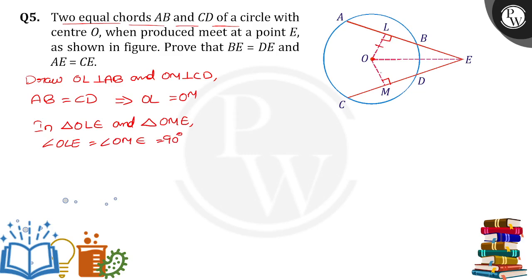Next, OL is equal to OM since the two chords are equal. Next, what is the next one? OE is the common side. So what is the common side here? OE is equal to OE.